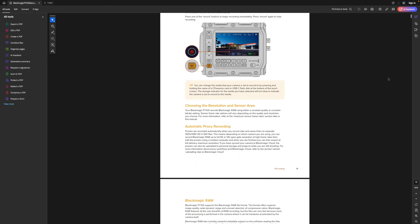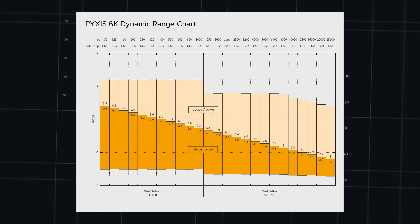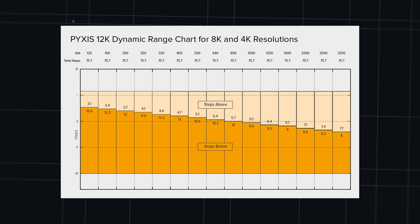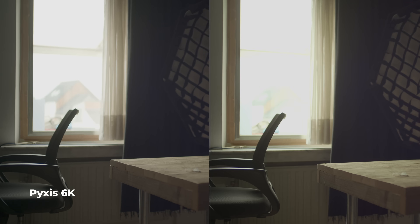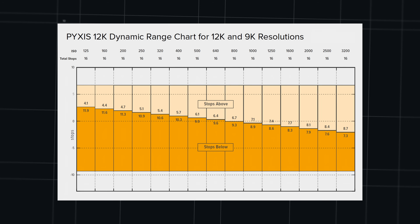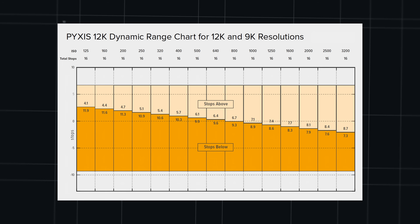I realized I was doing it all wrong — read the manual first. When two cameras both have 16 stops of dynamic range, they might still handle highlights and shadows differently because a sensor gives a certain number of stops above middle gray and below. At ISO 800, the Pyxis 6K gives 6.9 stops above and 6.8 below. The Pyxis 12K in 8K or 4K gives 5.7 stops above but 10 stops below. In 12K or 9K you get 6.7 stops above and 9.3 below — similar highlights to the 6K but a lot more in the shadows.